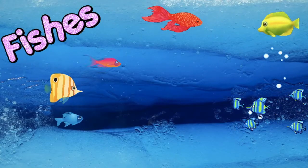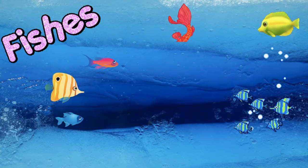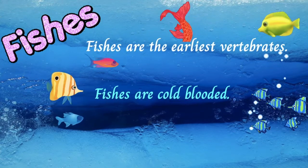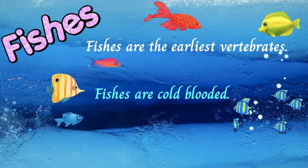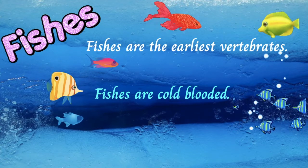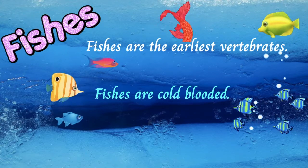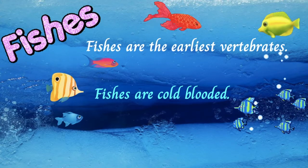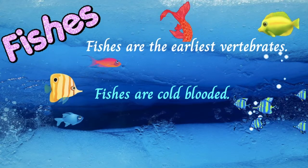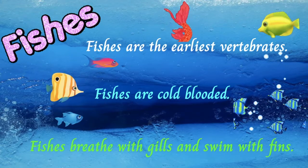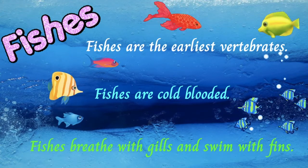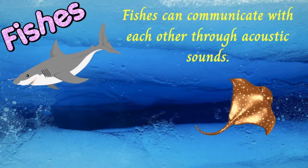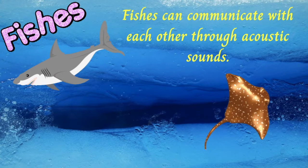Let's first have a closer look at fishes. Fishes are the earliest vertebrates. Fishes are cold-blooded. Cold-blooded animals cannot regulate their internal body temperature with a change in the environment, meaning they cannot survive in extreme temperature conditions. Next, fishes breathe with gills and swim with fins. And did you know? Fishes talk to each other through acoustic sounds.